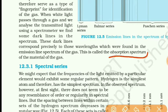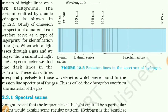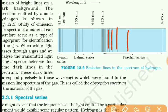Now, absorption spectra. In emission spectra, bright lines are obtained, and in absorption spectra, on a white screen, dark lines are obtained.